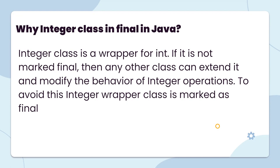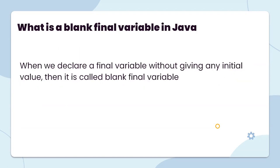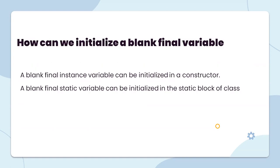Why is the Integer class marked final in Java? Integer class is the wrapper class for the primitive type int. If it is not marked final, then any other class could extend it and modify the behavior of integer operations. To avoid this, the Integer wrapper class is marked as final. What is a blank final variable in Java? When we declare a final variable without giving it an initializing value, it is a blank final variable. A blank final instance variable can be initialized in the constructor, and a blank final static variable can be initialized in a static block of the class.